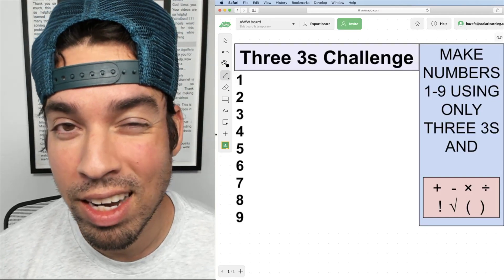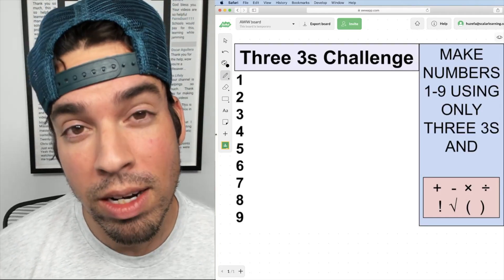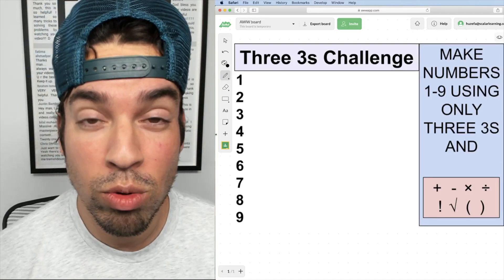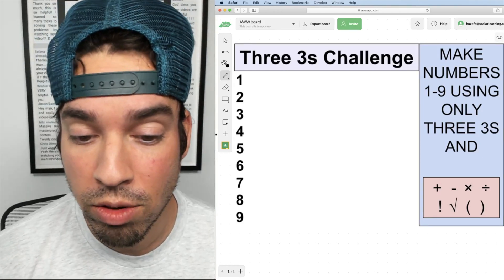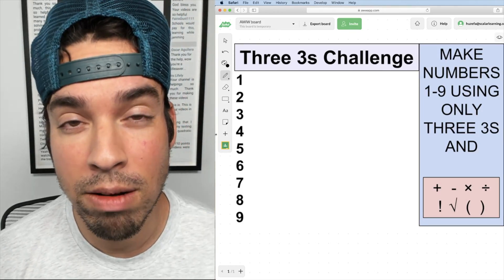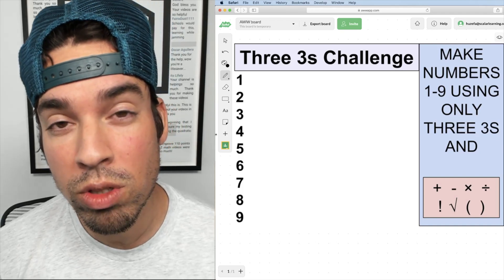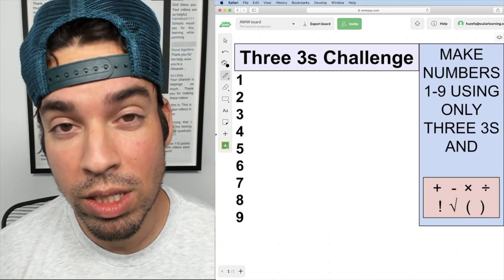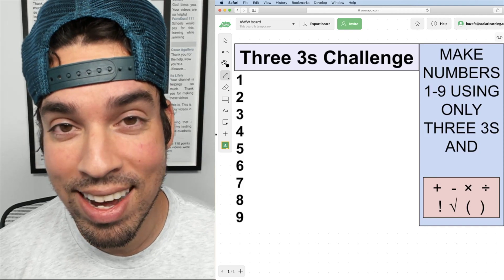The operators are plus, minus, times, divide, factorial—that's the exclamation mark which is kind of like the multiplication countdown. Three factorial is three times two times one, two factorial would be two times one, etc. Square root and parentheses are also available. So those are your tools and with those tools and three threes you're supposed to come up with numbers one through nine.